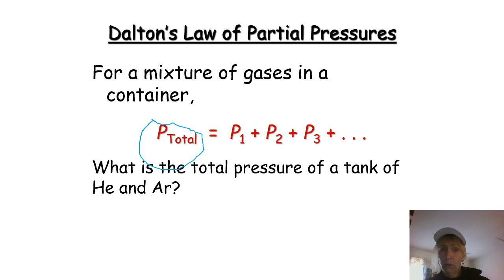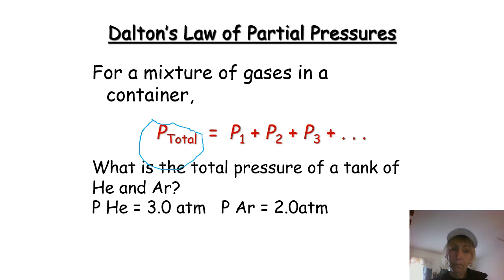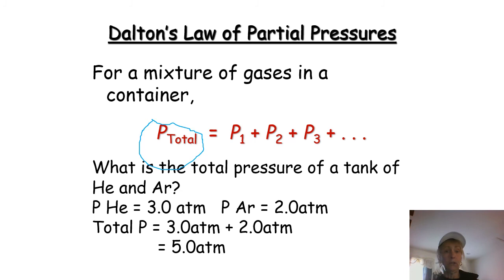Here's an example of the type of problem: what is the total pressure of a tank of helium and argon gas, when the partial pressure of helium is 3 atmospheres and the partial pressure of argon is 2 atmospheres? To find the total pressure, we simply add: 3 atmospheres plus 2 atmospheres equals 5 atmospheres.